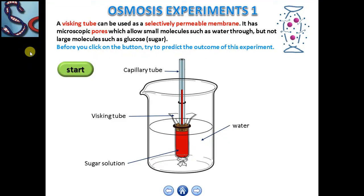This is osmosis experiment number 1. A visking tube can be used as a selectively permeable membrane. It has microscopic pores which allow small molecules such as water through, but not large molecules such as glucose.